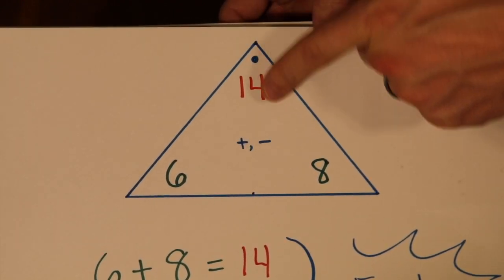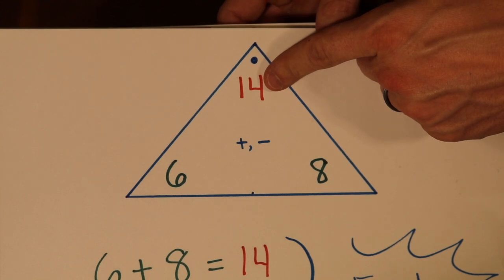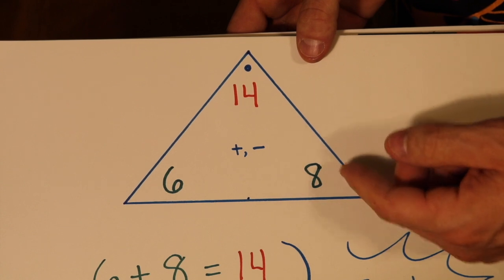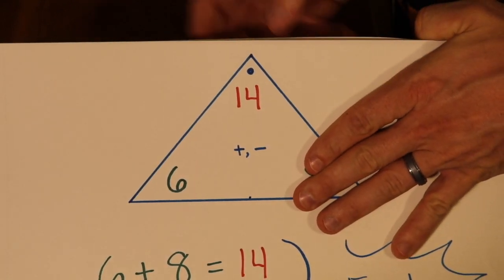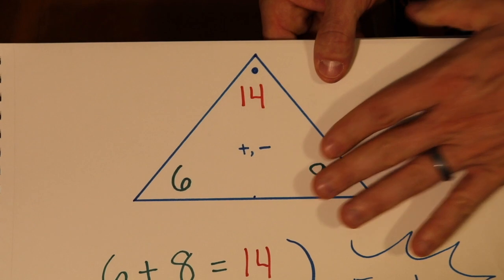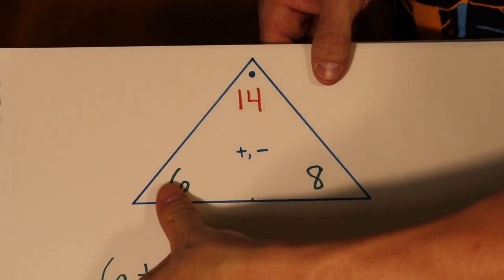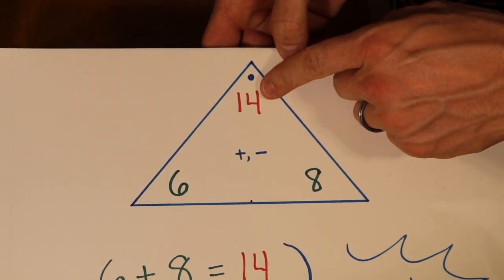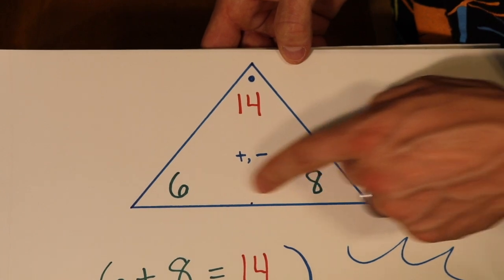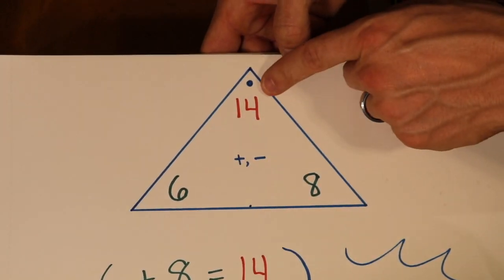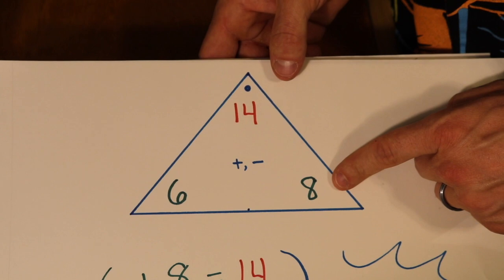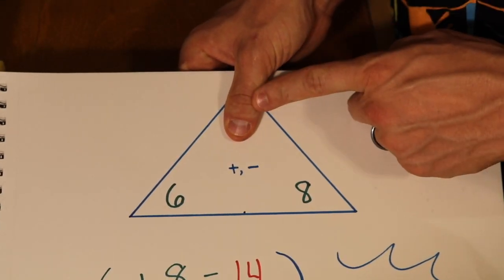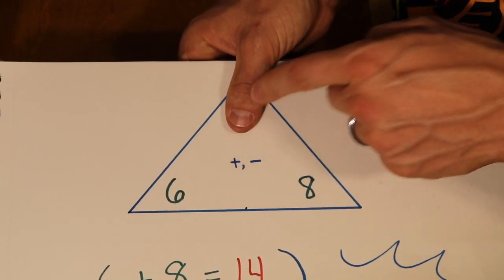Right here you can see the sum is at the top. Notice the dot indicates the largest number, the sum, and your two addends are down here. If I was subtracting and I covered the 8, then this 8 would be one of the differences. Or I could cover the 6. What the student would be doing is telling you out loud: 14 minus 8 equals 6, or 14 minus 6 equals 8, or 6 plus 8 equals 14, or 8 plus 6 equals 14.